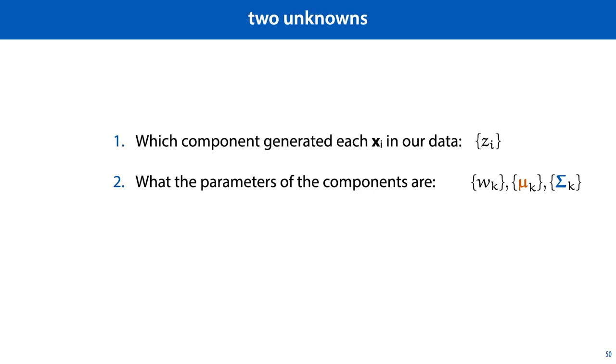Instead, we'll apply the philosophy of alternating optimization. First, we state our two unknowns. We don't know which component generated each XI in our data, and we don't know what the parameters of the components are. If we knew which component generated each point, we could easily estimate the parameters. We just partition the data by component, and use the maximum likelihood estimator on each component.